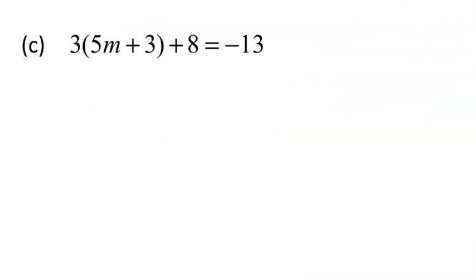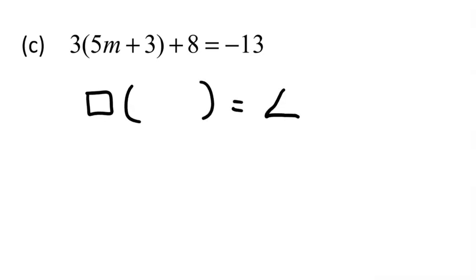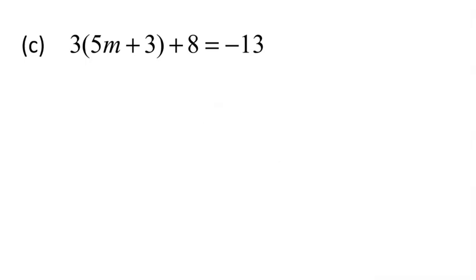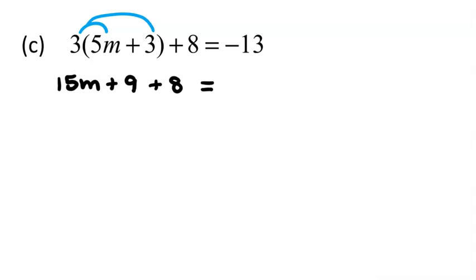This next question is a little different. We've got 3 times, then in brackets 3m plus 3, but there's also a plus 8 outside the brackets at the end, and that equals negative 13. Because it's not a simple number-times-bracket equals number, and these two numbers don't have a common factor, let's just go ahead and expand that bracket. Expanding gives us 15m plus 9, and don't forget the plus 8 that was waiting outside — equals negative 13.